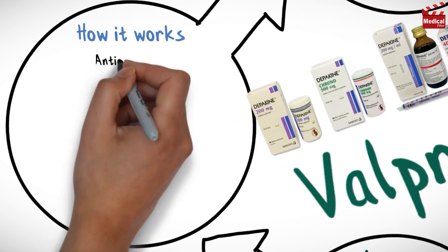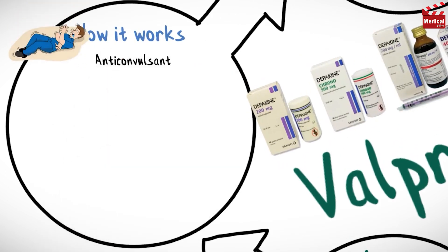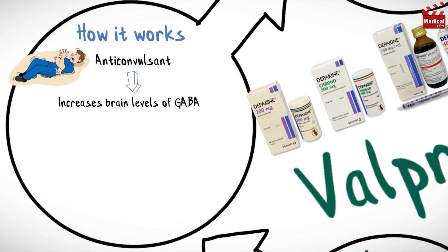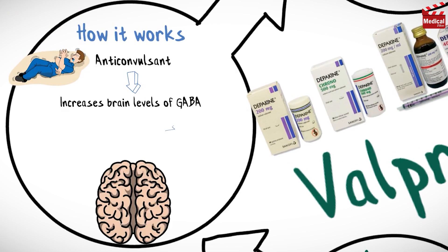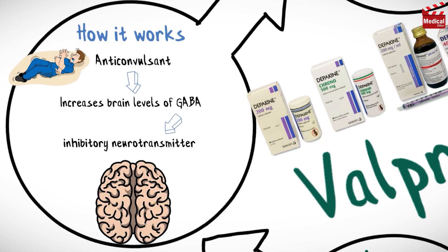Valproic acid is an anticonvulsant agent. It increases brain levels of GABA, which is an inhibitory neurotransmitter.